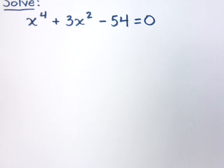When we look at this equation, this tells us that we should have four answers. How are we going to get those four answers?